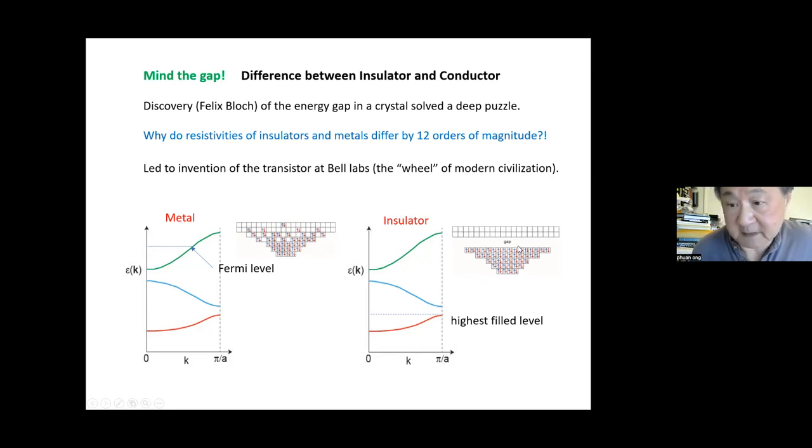If the bands don't overlap, then you have the possibility of having an insulator. Whenever the Fermi energy ends up in the gap, you have an insulator. If you were unfortunate enough to have the Fermi energy be inside the gap, then you have an insulator. The discovery of this gap was transformational. It was Felix Bloch. Before his work, it was a big mystery why the resistivities differ by 10 to the 12th between all kinds of elements.